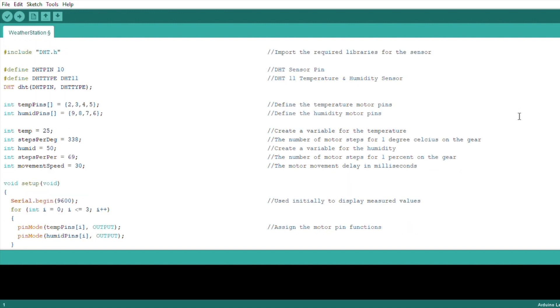We then assign the pins for the two stepper motor drivers. We then create variables for the temperature and humidity measurements, as well as the two values for the number of steps the stepper motors need to make in order to move the temperature gear by one degree and the humidity gear by one percent. The values set as the temperature and humidity here are the initial values, which should be set when you place the gears onto the motors before powering the weather station up. The gears will then move to the correct measured values from these starting values.